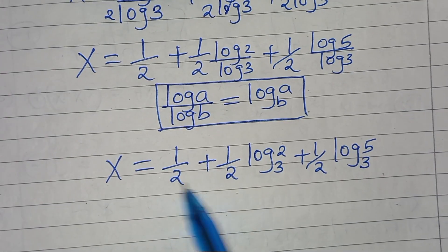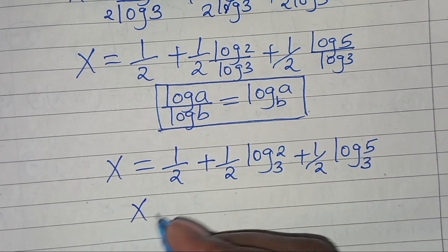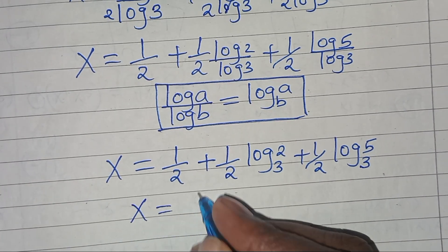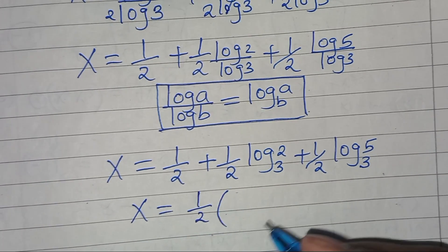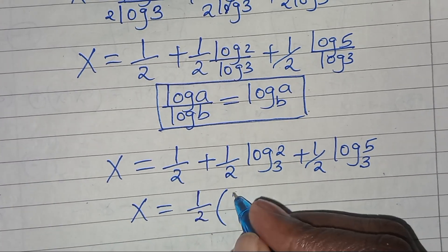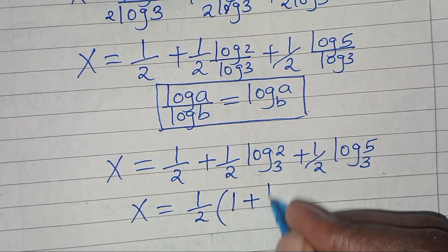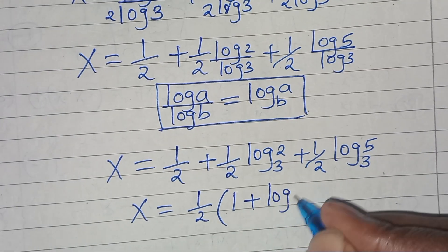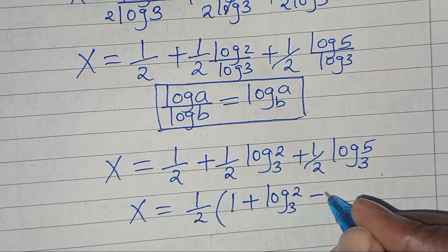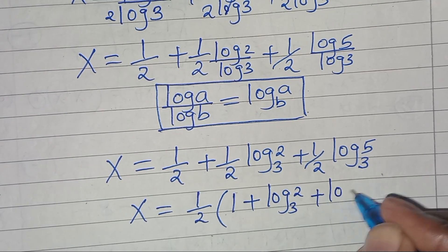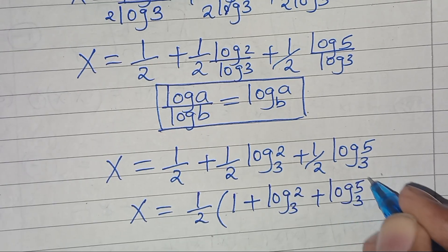Since one-half is common, we can factor it out, so x equals one-half times (1 plus log₃2 plus log₃5).